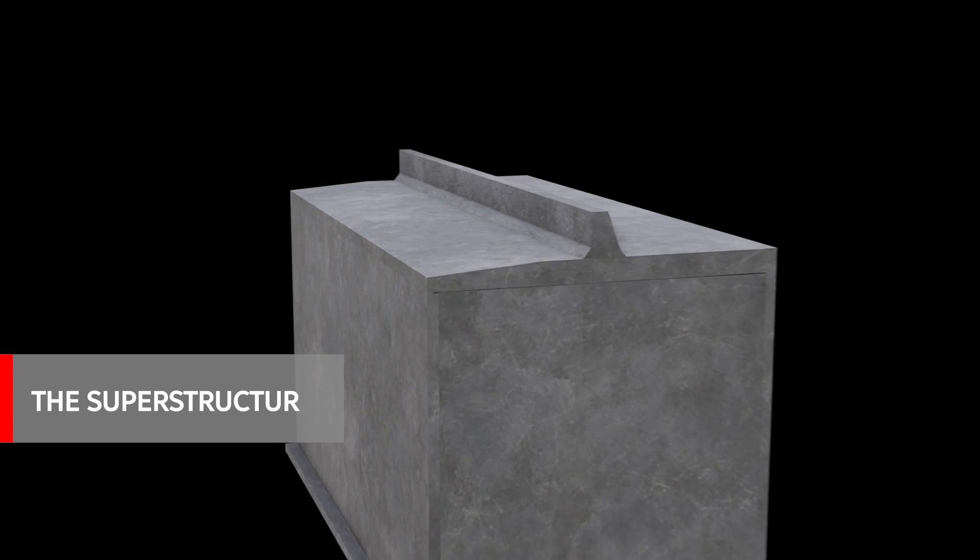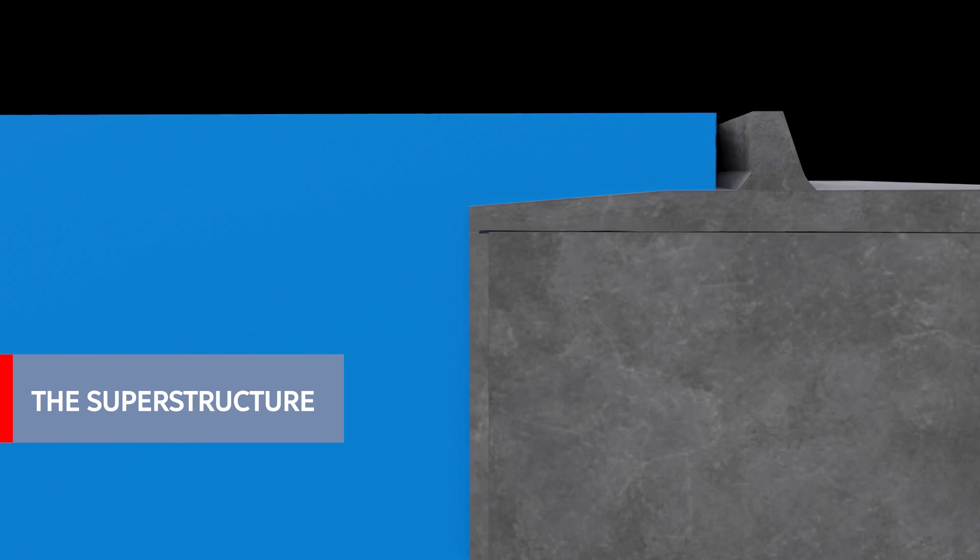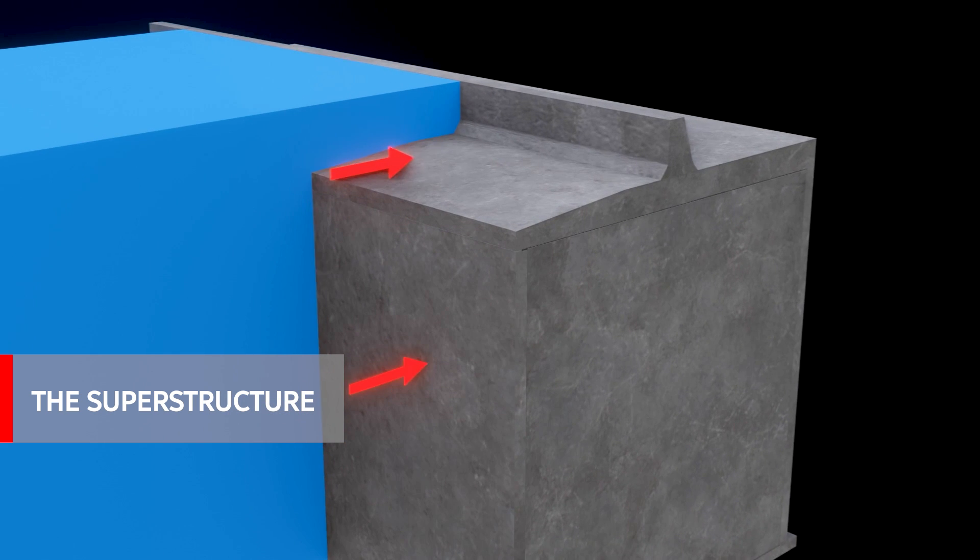The superstructure of the caissons is made with a crown wall that has AR profiles studied to reduce the combined effect of the superficial hitting waves and the underwater pressures.